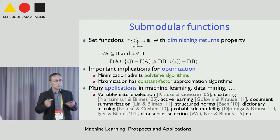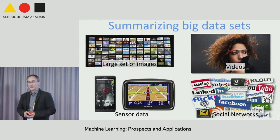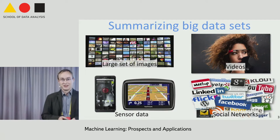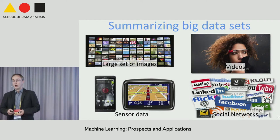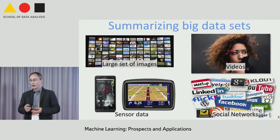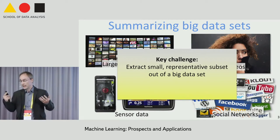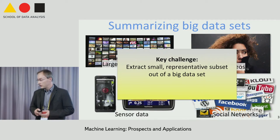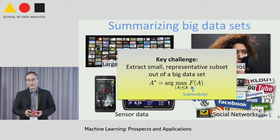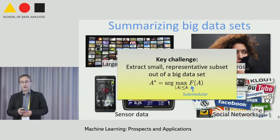What I'd like to tell you about today is one application that has received quite a bit of interest recently: summarizing large datasets. Suppose we take all images on the web, or maybe those from our last vacation, and want to pick a small representative subset. Or imagine recording our lives with a camera and wanting a small diary, summarizing sensor data, news feeds, social networks, and so on. In all these cases, we want to extract a small representative subset from a big dataset, which can be formalized as maximizing a submodular utility function f over subsets, subject to constraints like picking at most k items.